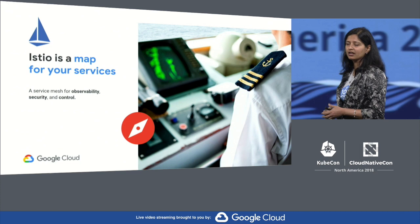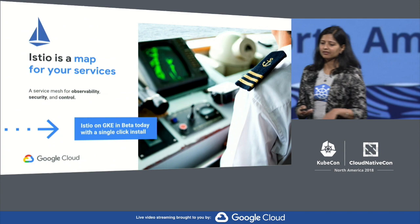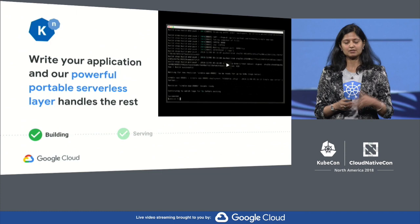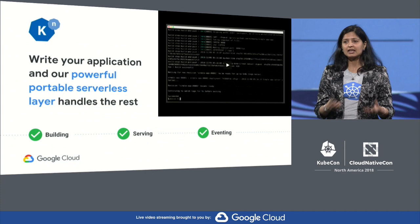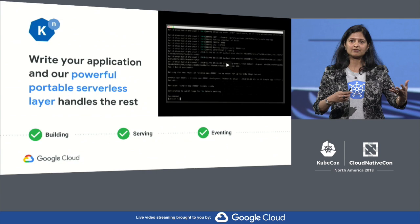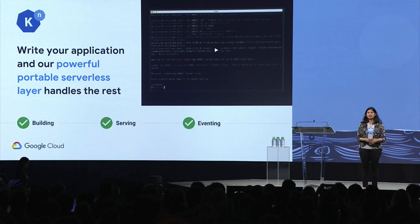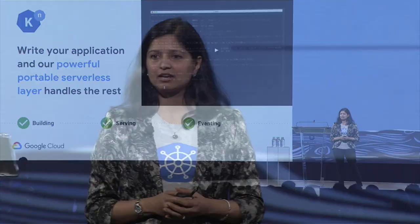But we're not stopping there. The next layer of the stack is much more developer-friendly — it's perhaps the most powerful piece, which is Knative, also an open source project. Knative is a portable serverless framework. A developer writes their application, and Knative handles building the container, creating the service, and deploying the application, scaling it from zero to one, as well as scaling it down when you're done. And in the most recent release, Knative 0.2, we've added support for events.